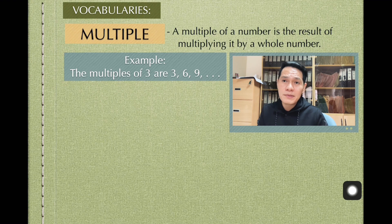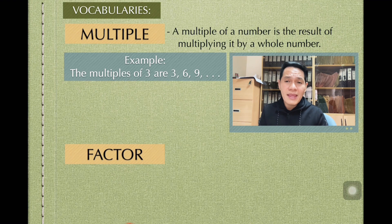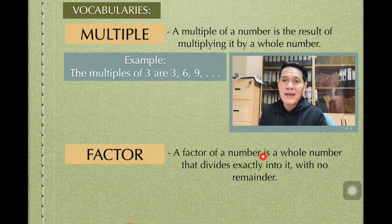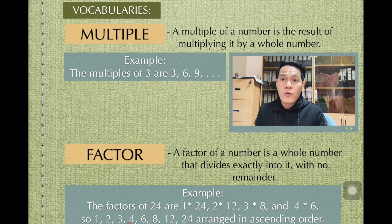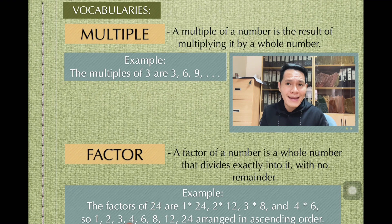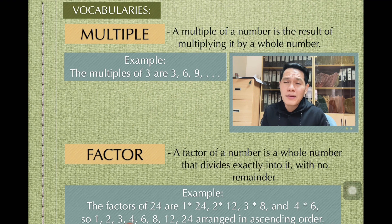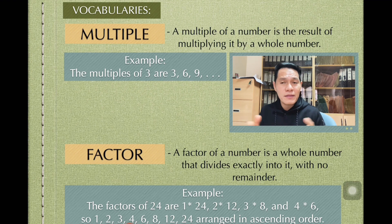So that is the meaning of multiples. The next vocabulary here is factor. When we say factor, a factor of a number is a whole number that divides exactly into it with no remainder. For example, I have here 24. What are the factors of 24? First is 1 and the number itself: 1 and 24. You also have 2 and 12, 3 and 8, and 4 and 6. When you divide 24 by a number without a remainder, then it's a factor.